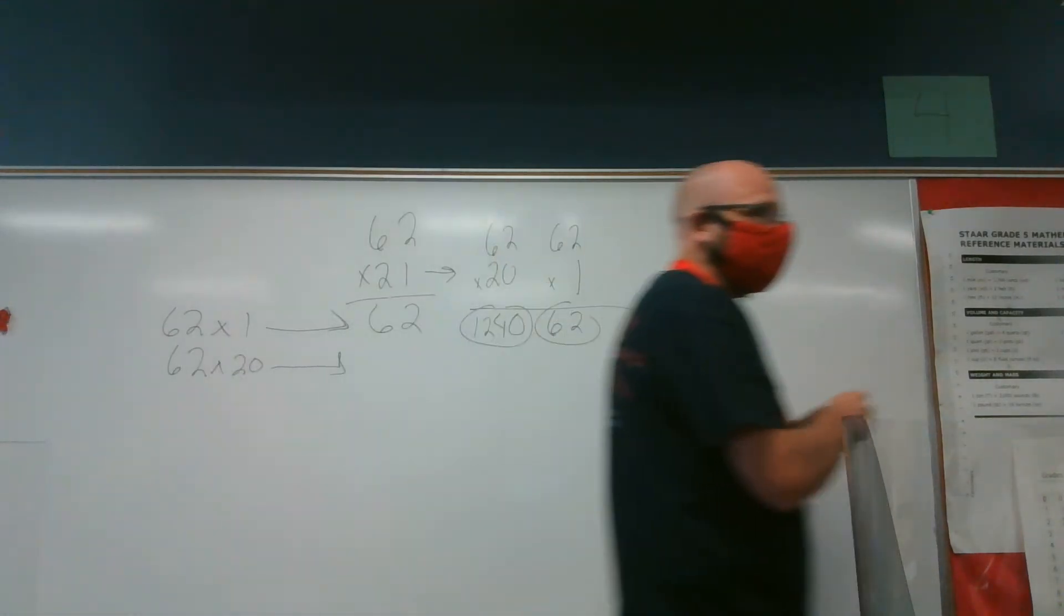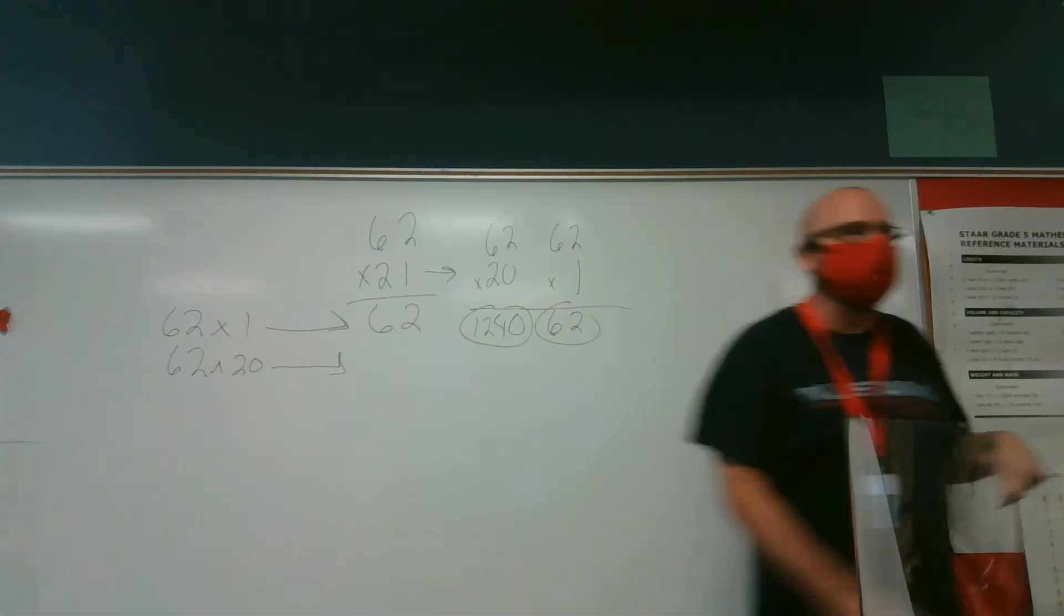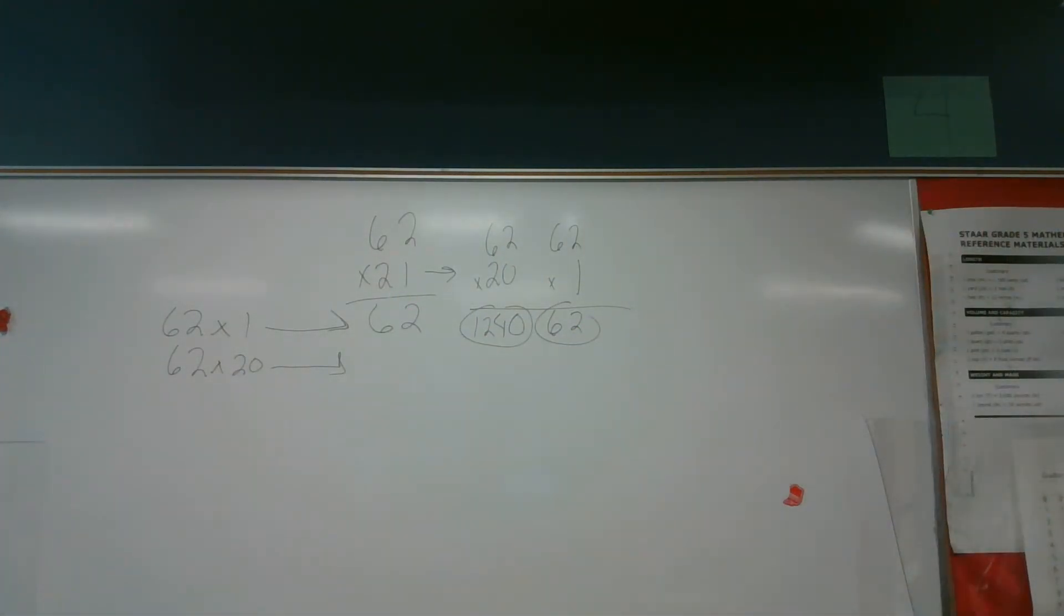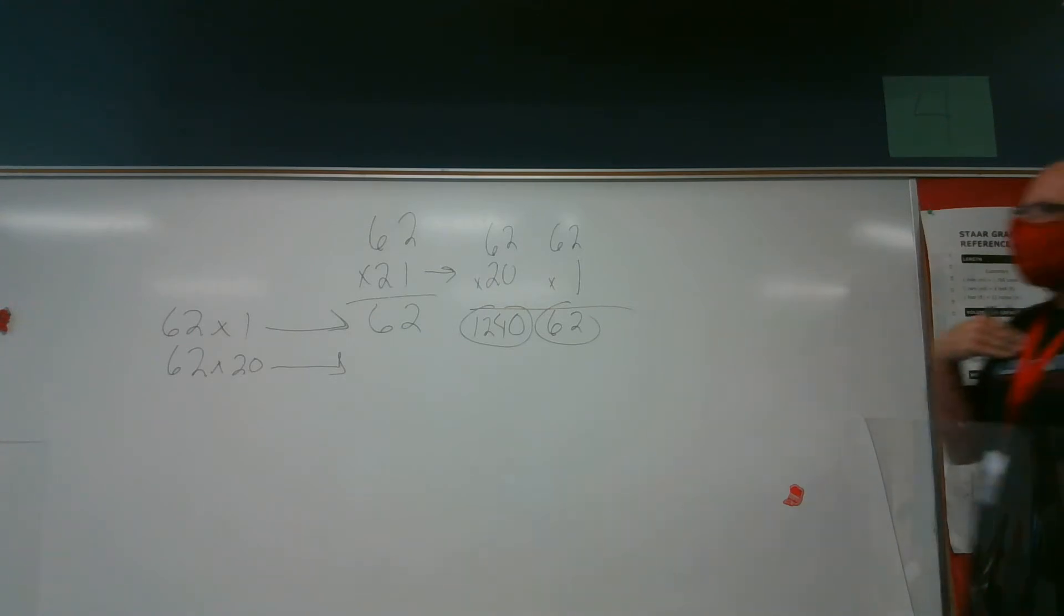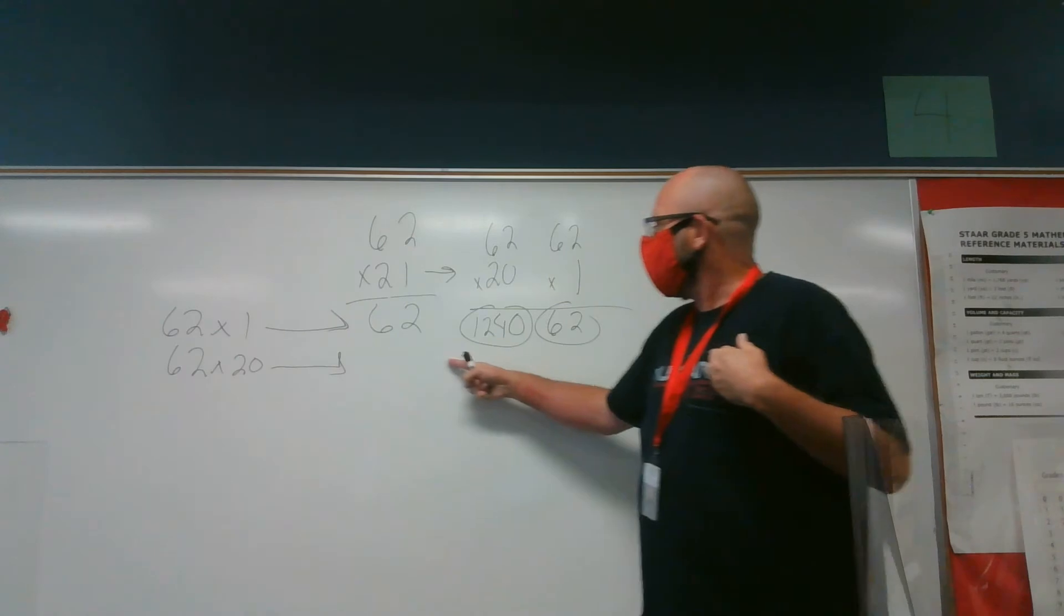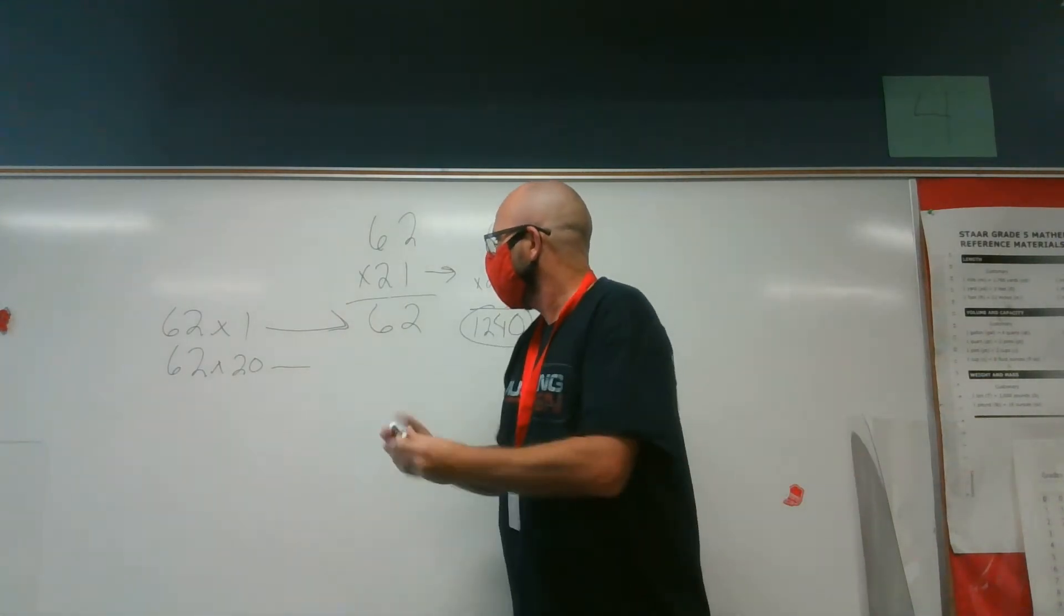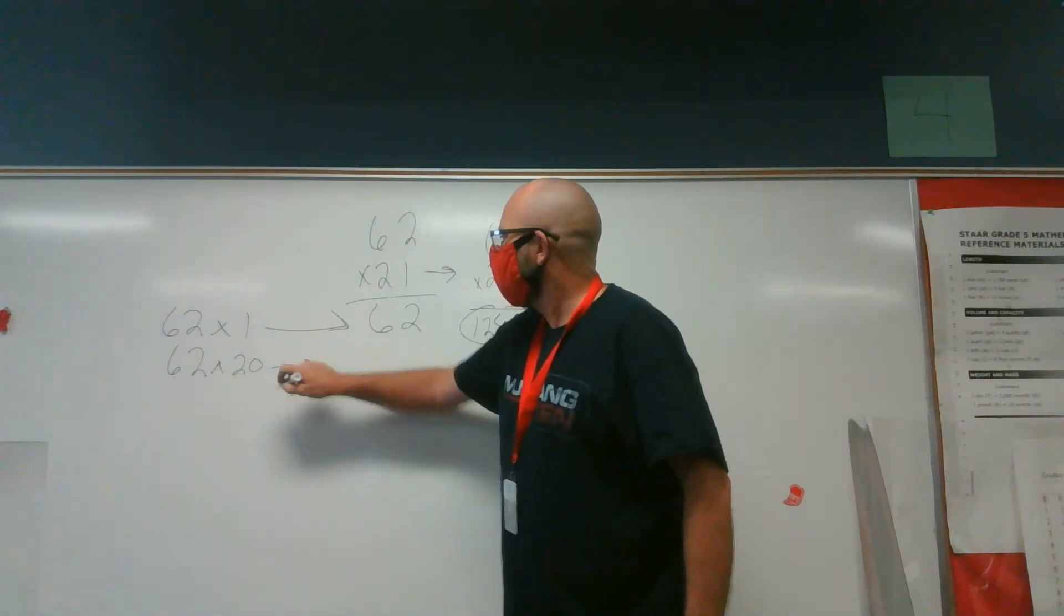So the second group is going to be 62 times 20. Where did I get 20? Because my 2 is in the tens place. So if they asked you the value of 2 in this number, you'd say 20. Just like we did at the beginning of the year. So if I do my math right, here I should get 1240.